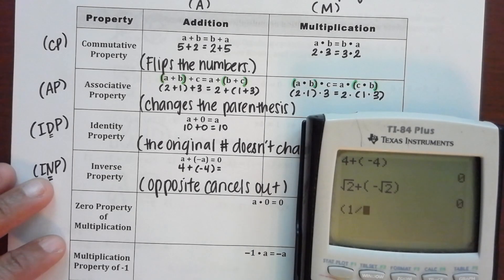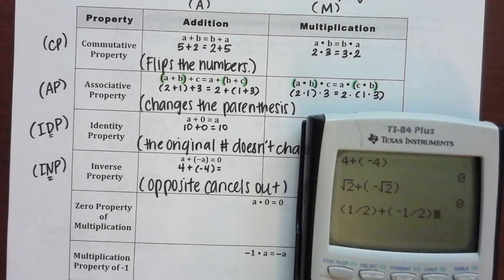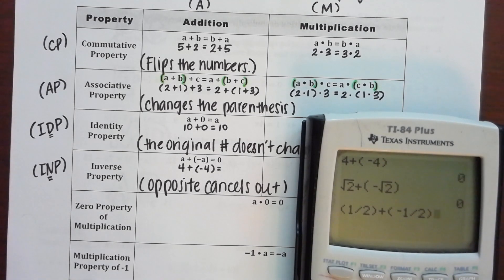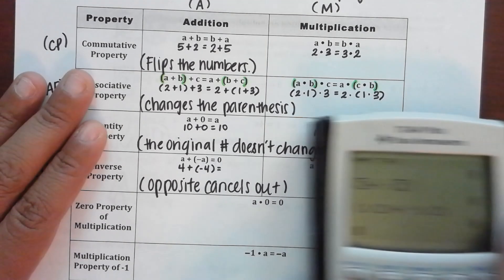Let's do it with one more number. Type in one half plus negative one half. For a half: parentheses, one divided by two, because it's just a division. Give everybody time. What did y'all get? Zero — it should have been zero. How you type it in matters, so type it in precisely and double check it.